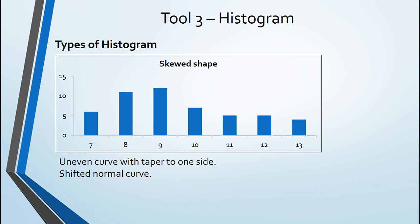Next is skewed histogram. This is alternative of normal curve shifted to either side of mean creating a taper in curve.